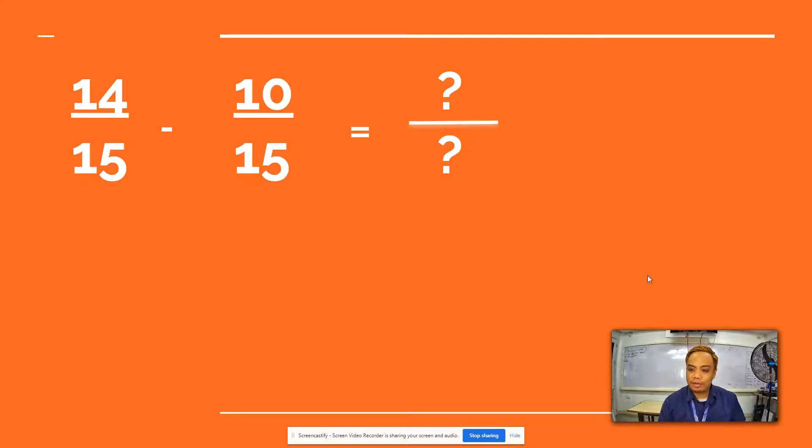Let us say we have 14 over 15 minus 10 over 15. Once again, we will execute the subtraction in our numerator. 14 minus 10, we have 4. 15 is our denominator. We will not do anything about it. We will just copy it and write it on our answer. So we have 4 over 15.